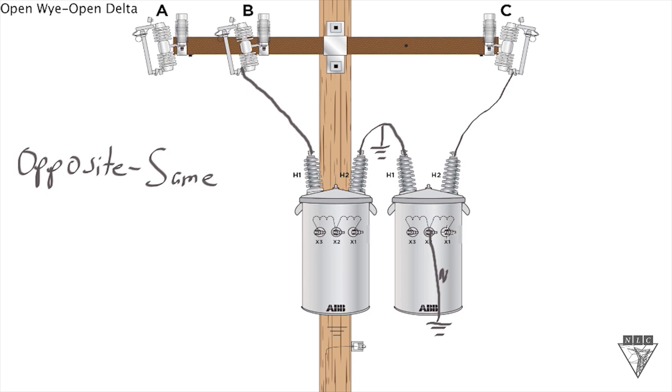Now what we need to do is tie the X1 bushings together, and now we'll just run these down. There's one hot leg. This X3 over here is our other hot leg, and then this X3 bushing over here is our power leg.